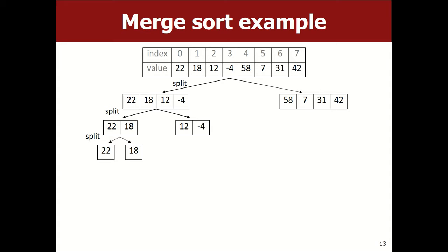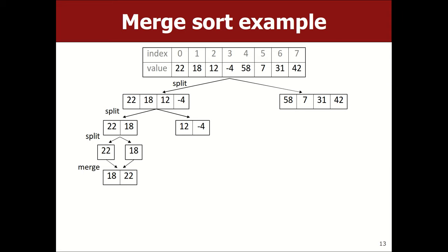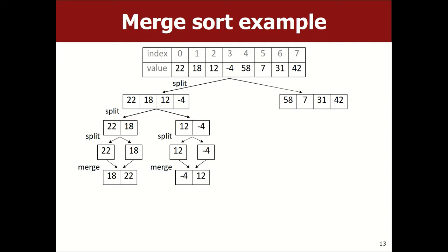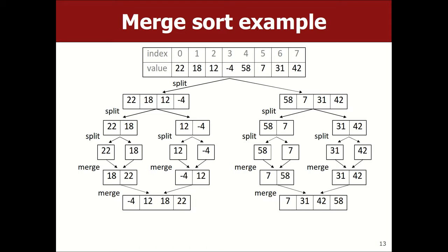So you have an array of size 8. Break it in half. How do you sort the halves? Recursively — merge sort each half. The base case is a single element or empty array, which is trivially sorted. After recursing all the way down, you merge. Merging: look at the front of each sorted half, grab the smaller one, put it in the result, and repeat until both halves are exhausted.